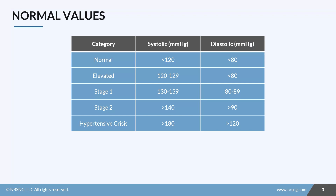So what are the ranges for blood pressure? This table is based on the 2017 American Heart Association guidelines, and they've actually removed the term prehypertension and lowered the threshold for diagnosis. The hope is that people can begin receiving treatment sooner.